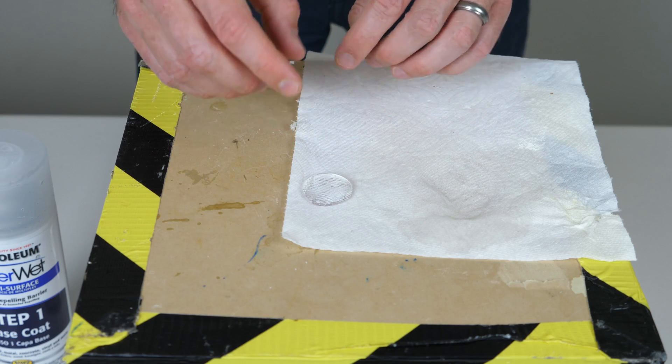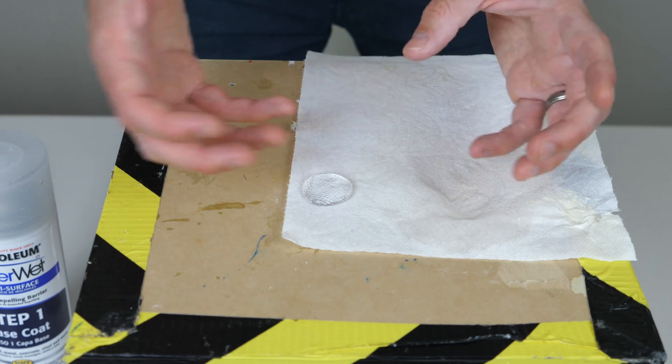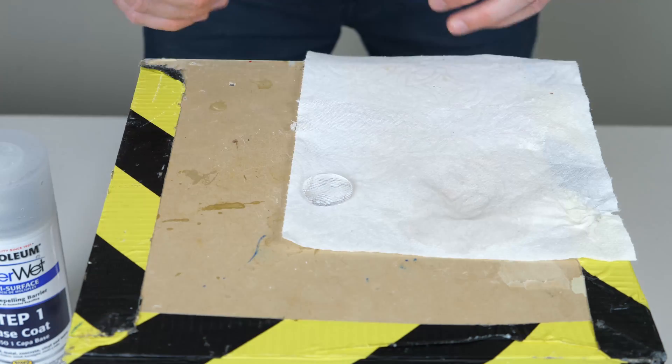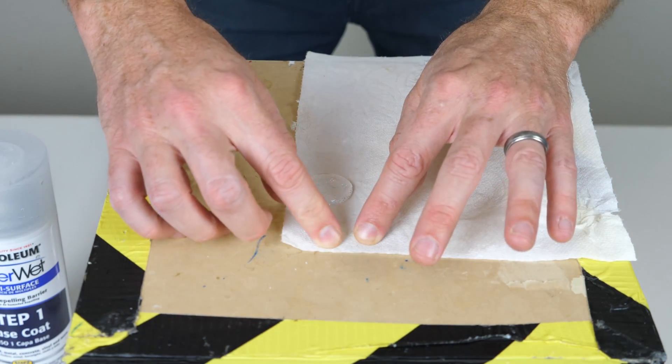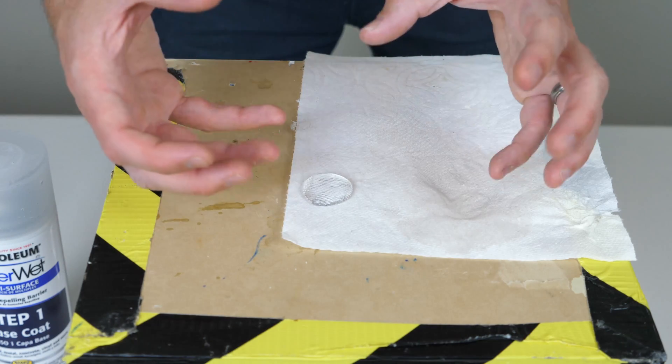So we call this water repellent, but what's interesting is that the water is not being repelled. In fact, the water is attracted to itself. The only thing is that we've stopped the cellulose from being attracted to the water, and so the water just naturally forms into a ball by itself.